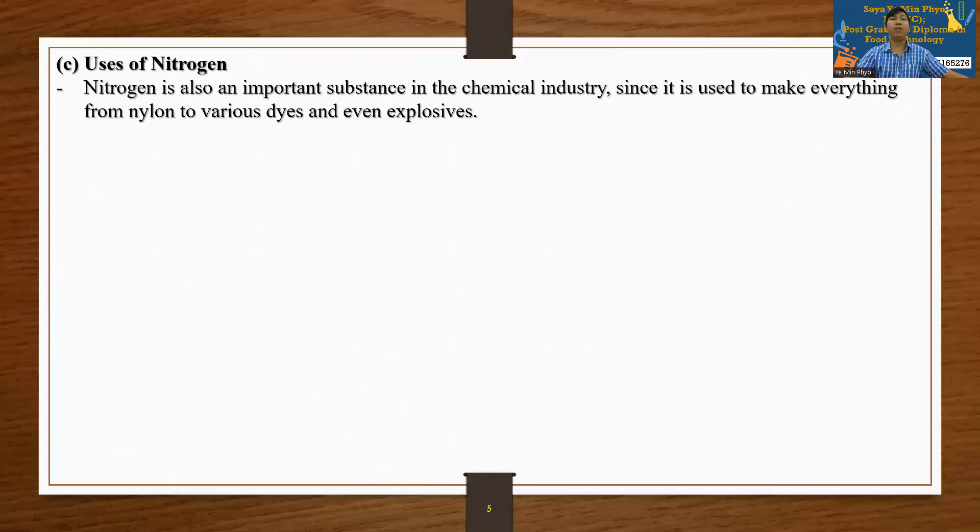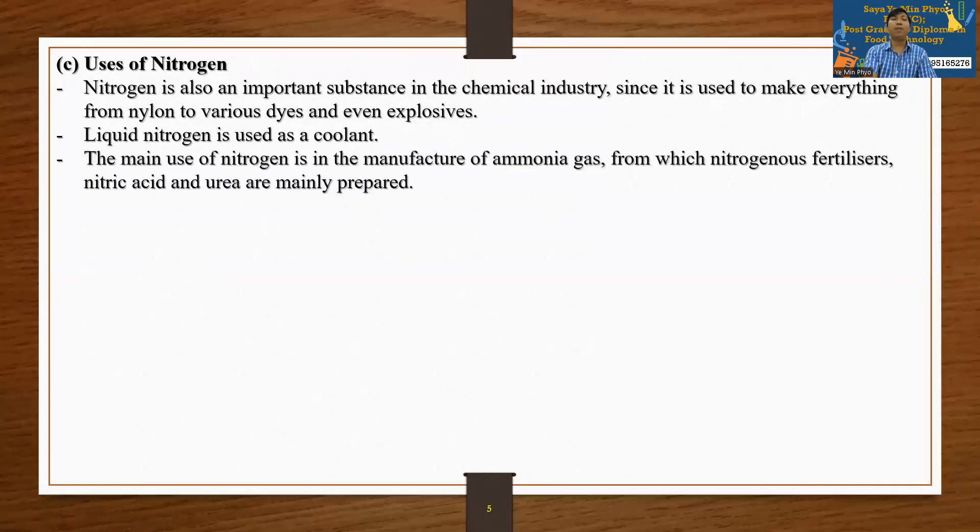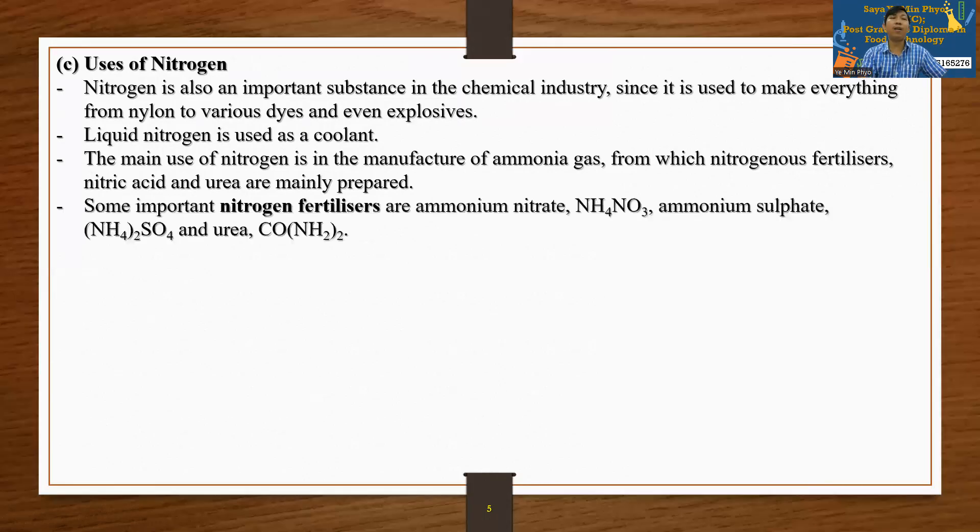Nitrogen is used to make everything from nylon to various dyes and even explosives. It is used in the manufacture of ammonia gas, from which nitrogen fertilizers are made. Nitrogen fertilizers include ammonia, nitric acid HNO3, ammonium sulfate (NH4)2SO4, and urea CO(NH2)2.